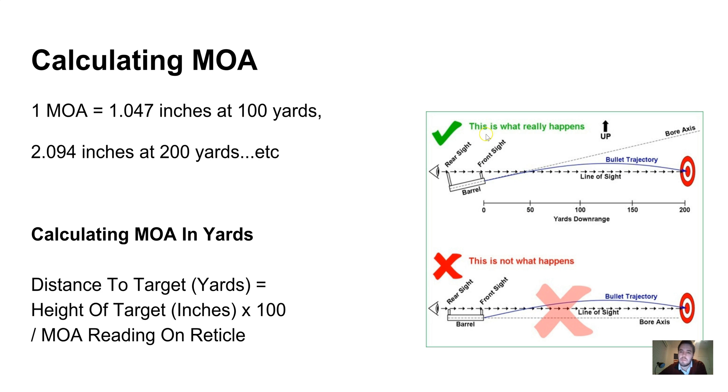We need to know that distance because you need to use your ballistics calculations from your ballistics card to understand how quickly gravity is going to pull the bullet down, so you know what angle to point your barrel at. If you want to know the distance of the target in yards, you take the height of the target in inches, multiply it by 100, and divide it by the MOA reading on the reticle.